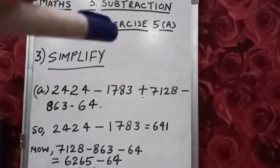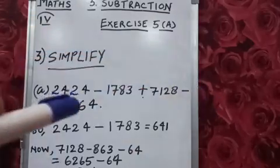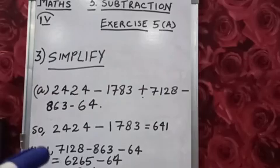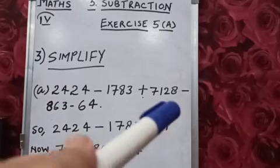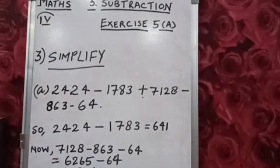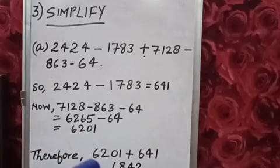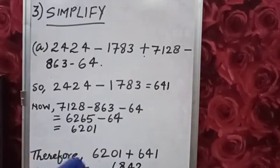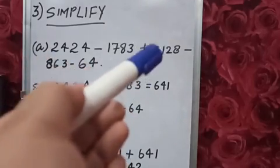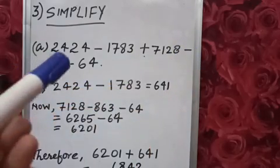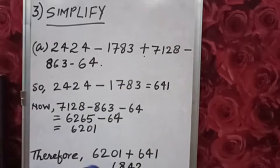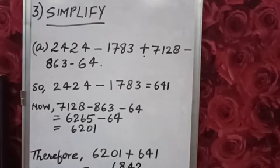Now we have solved both equations — before the plus sign and after the plus sign. Before the plus sign, subtracting gave us 641. After the plus sign, subtracting gave us 6,201. Now we will add both answers because there is a plus sign in between. So 6,201 plus 641. We will get 6,842.